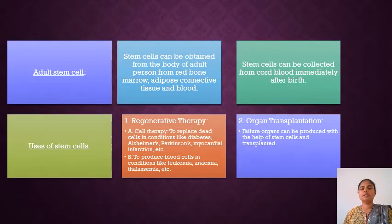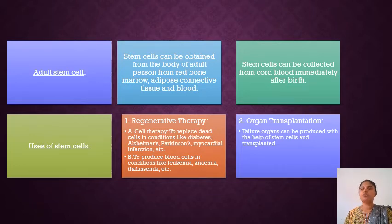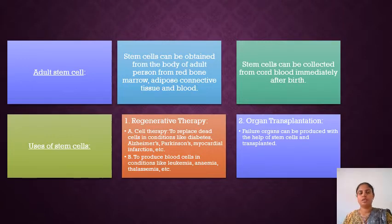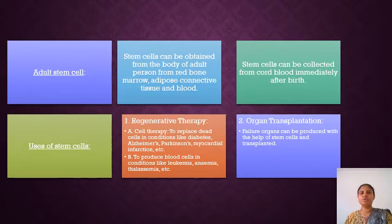Next, let us see what adult stem cells are. Stem cells can be harvested from grown-up adults as well. They are found in red bone marrow, adipose connective tissue, and blood. Stem cells can also be collected from the umbilical cord soon after birth. The uses of collected stem cells are classified into two types.